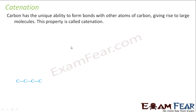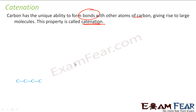Carbon has a unique property of forming bonds with other carbon atoms, and that gives rise to a large number of molecules. This property is called catenation. Carbon has a unique ability to form bonds with other carbon atoms, and this gives rise to a large number of molecules. This property is called catenation.